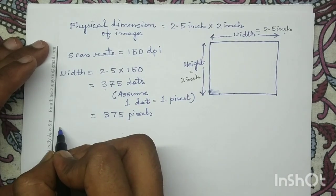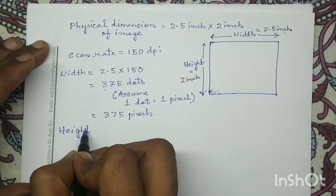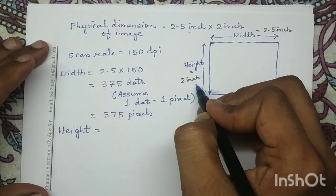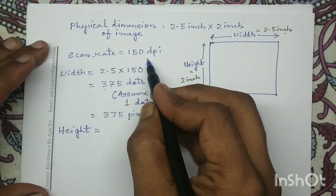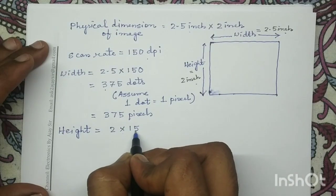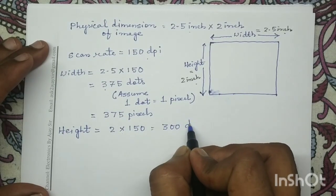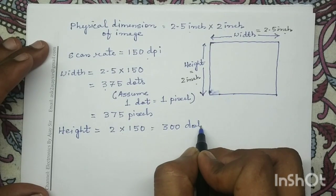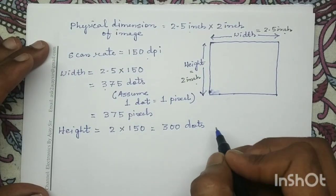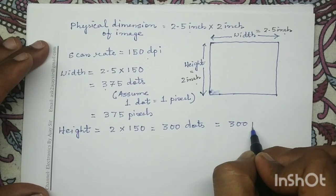Next we will determine the pixel count for the height as well. For height, we have the dimension 2 inch and the scan rate is 150 dpi. So height equals 2 into 150, that is 300 dots. Since we have assumed one dot represents one pixel, 300 dots represent 300 pixels.